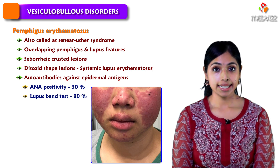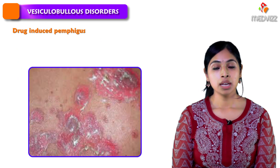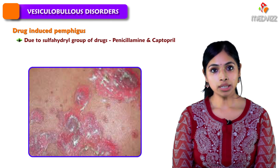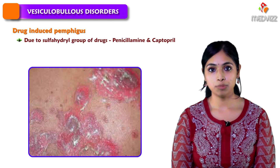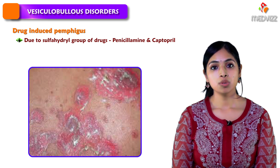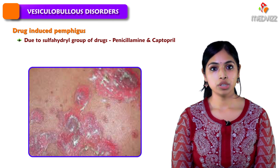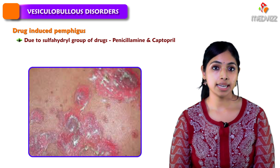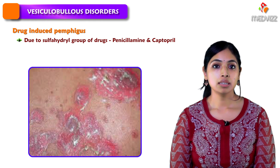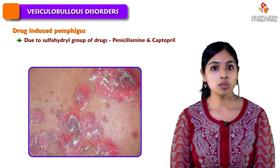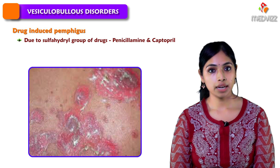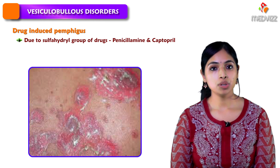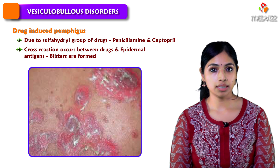The next entity is drug-induced Pemphigus. This is seen with sulfhydryl group of drugs, mainly penicillamine and captopril. When these sulfhydryl group drugs are taken, in genetically susceptible patients, the epidermal antigens also have a sulfhydryl component, due to which an immunoreactivity or cross-reaction occurs, leading to the formation of blisters.